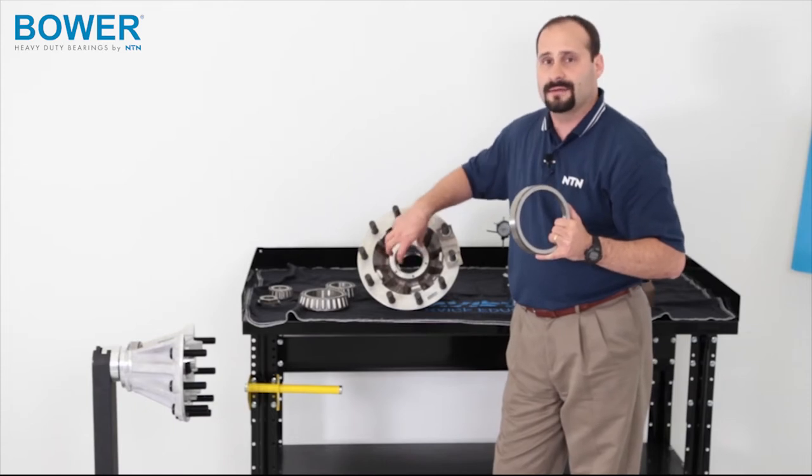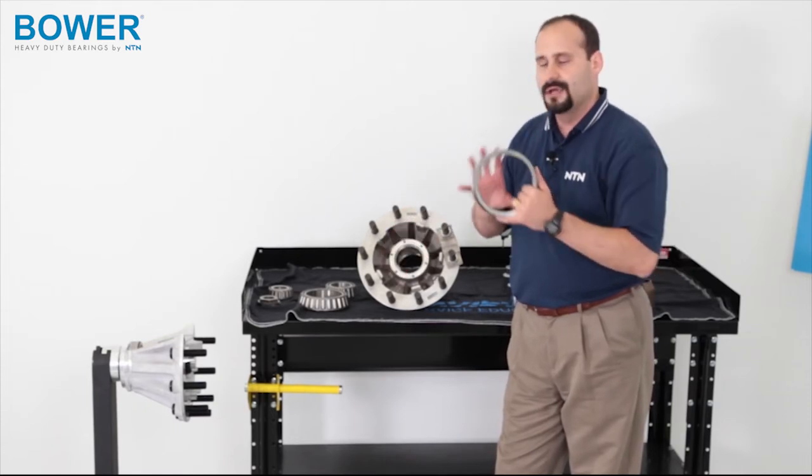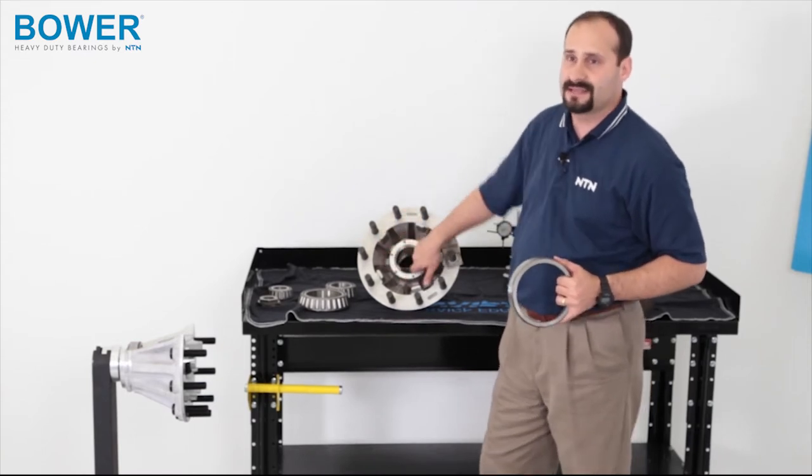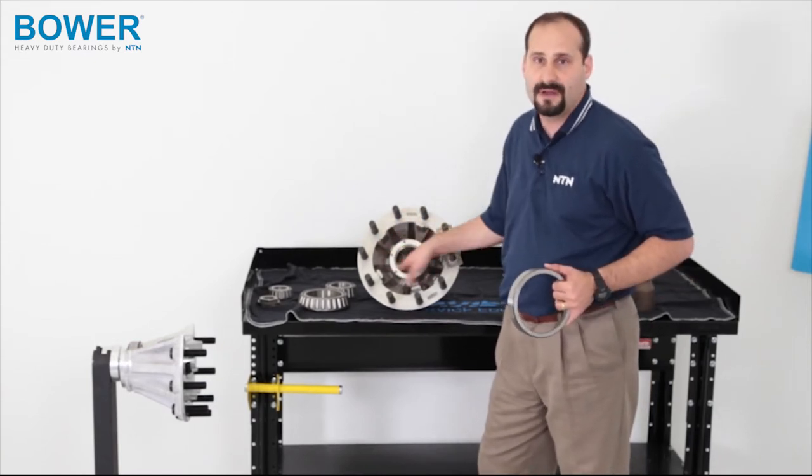So, if there's a lot of dirt and mucked up material on here, you will push this race in and it'll take on the shape of what that housing looks like. So, you want to take like scotch bright or something to take away that fretting corrosion.